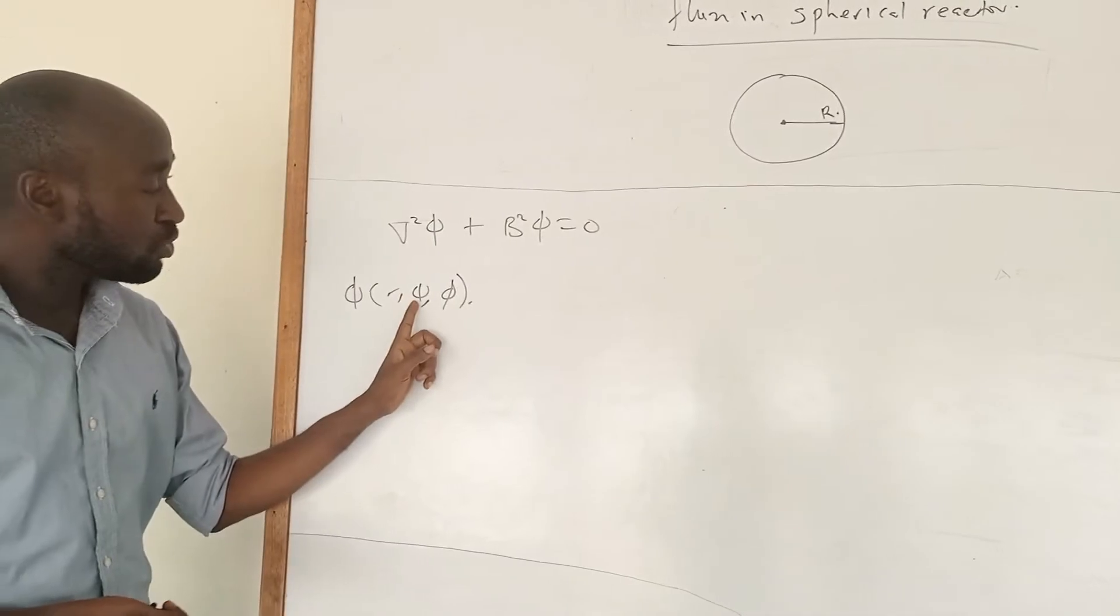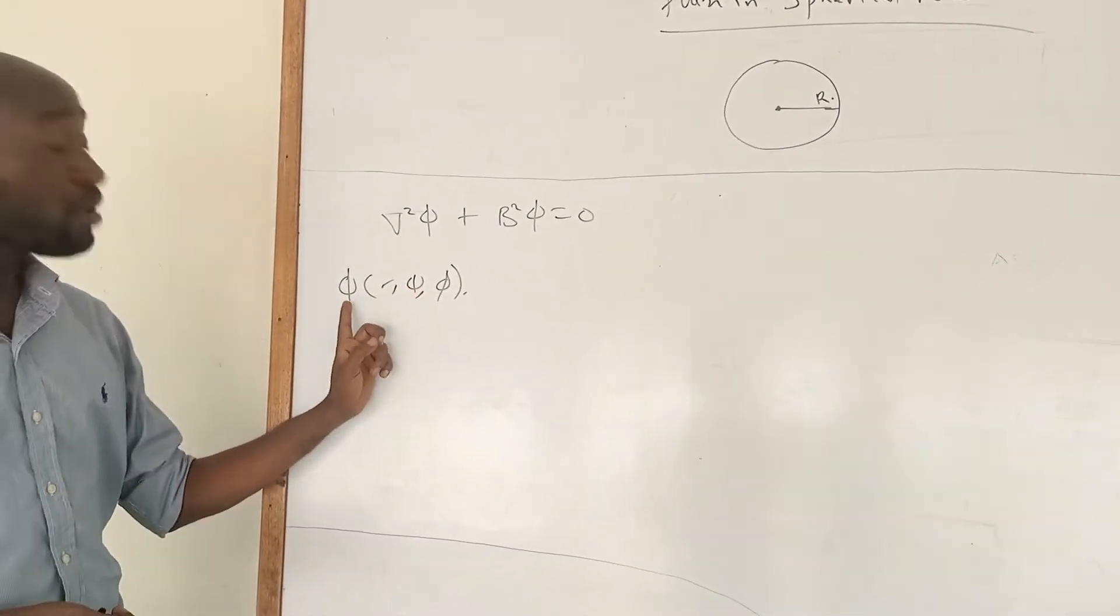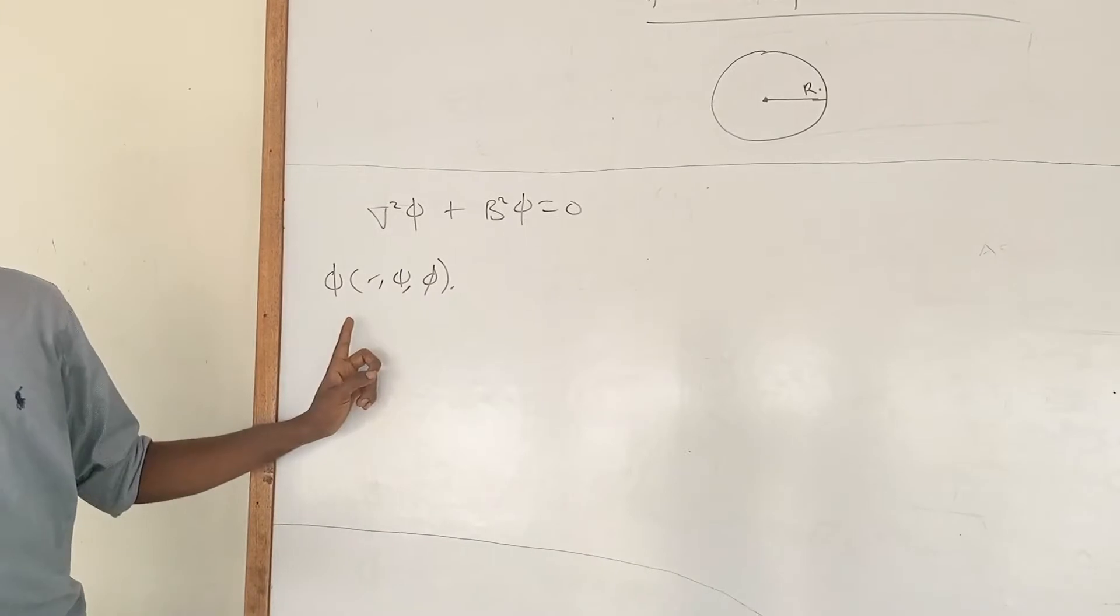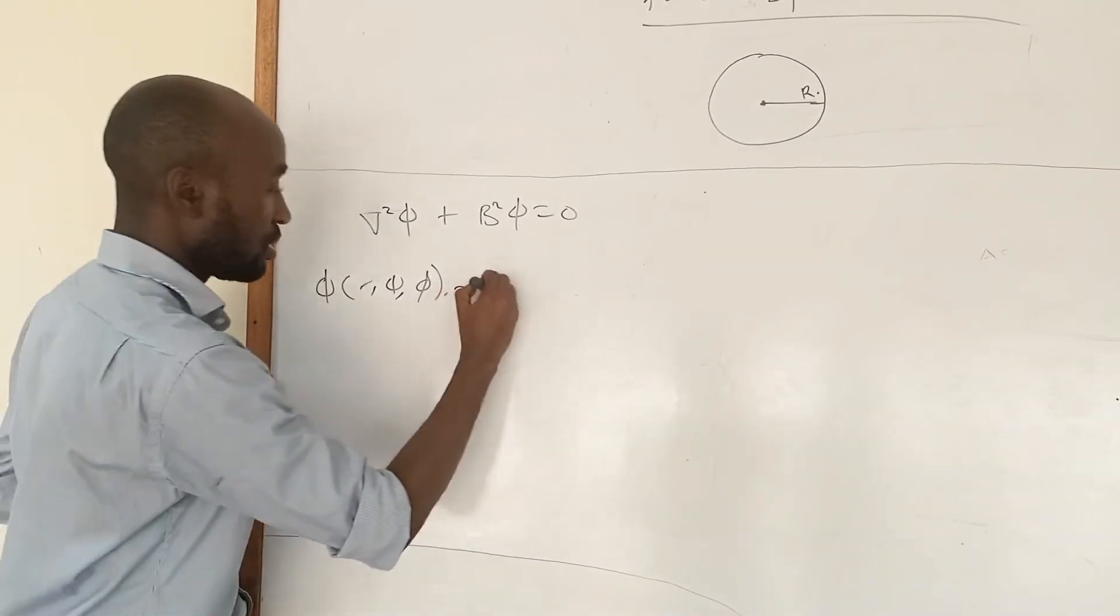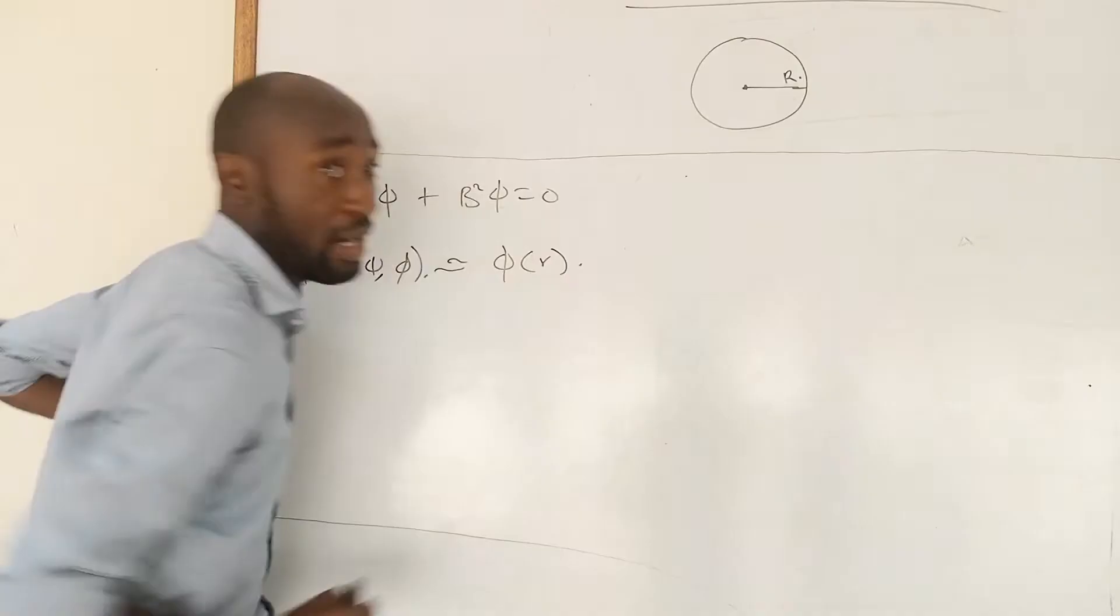But flux will not depend on the two angles, so flux will only depend on a single variable. So this one, phi is a function of R.